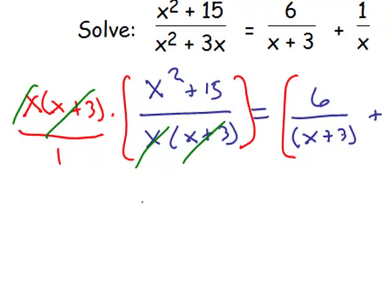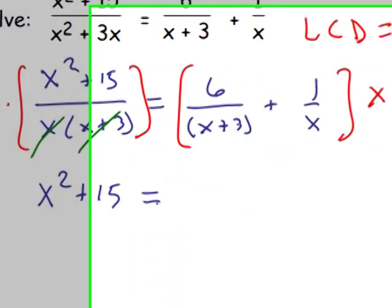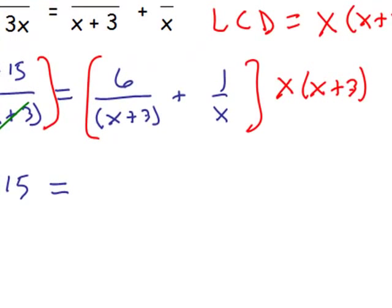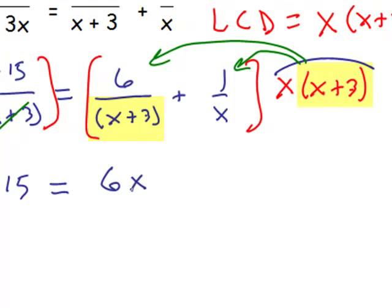We get just the numerator x squared plus 15, equals. On the right side, as we distribute this entire thing, this entire LCD to each fraction, something different will divide out each time. When we multiply it times the 6 over x plus 3, it's the x plus 3s that divide out, and we have left a 6 and an x that was distributed. Plus, in the second one, it's the x's that divide out, and we have left a 1 times x plus 3, or just x plus 3.